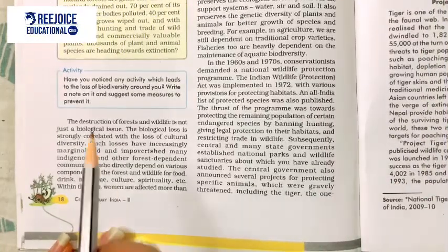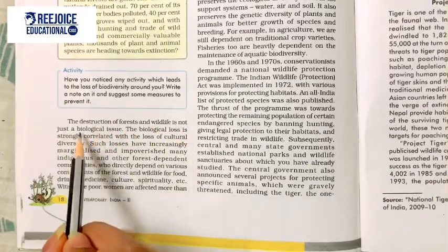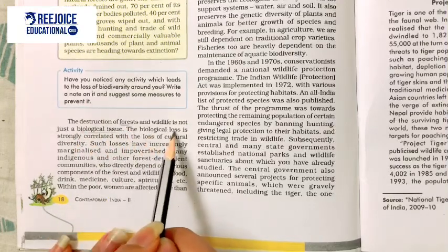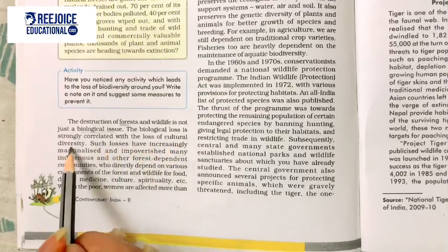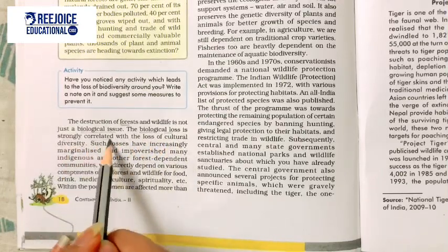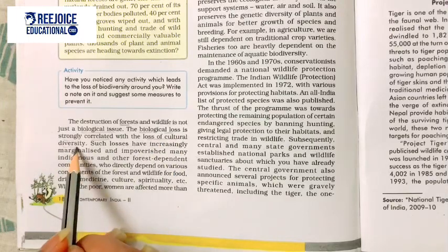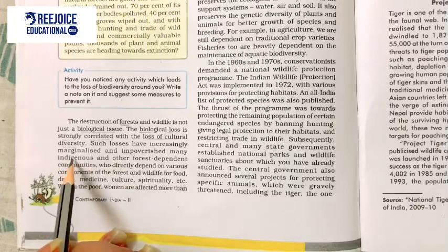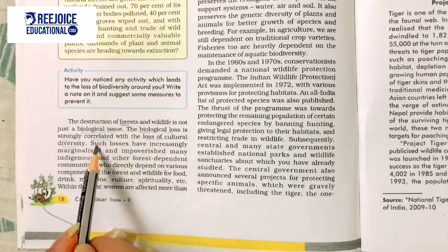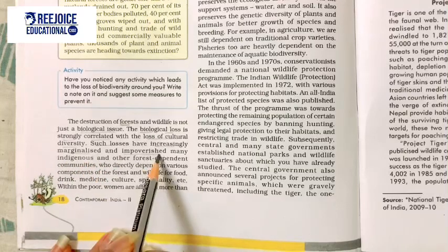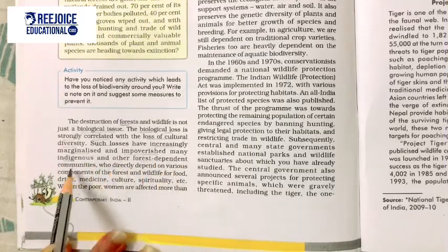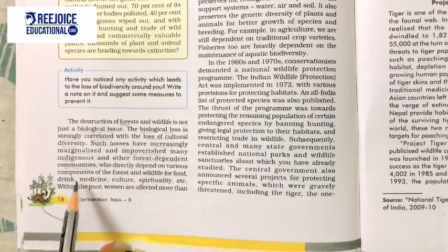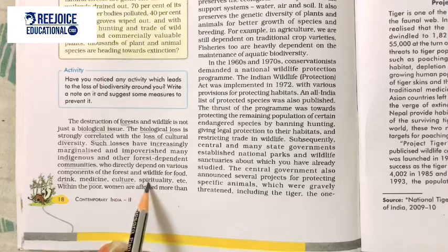The destruction of forest and wildlife is not just a biological issue. The biological loss is strongly correlated with the loss of cultural diversity. Such losses have increasingly marginalized and impoverished many indigenous and other forest-dependent communities who directly depend on various components of the forest and wildlife for food, drink, medicine, culture, and spirituality.